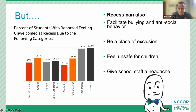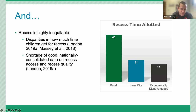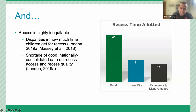Recess is also completely inequitable. There are disparities in how much time children get: children in inner city schools, economically disadvantaged schools, and racial and ethnic minority schools get the least amount of recess time. We also know there's a shortage of nationally consolidated data on recess access and quality, so from a macro policy standpoint it's hard to inform decisions about how to improve recess. Kim is going to dive deeper into the data that does exist.